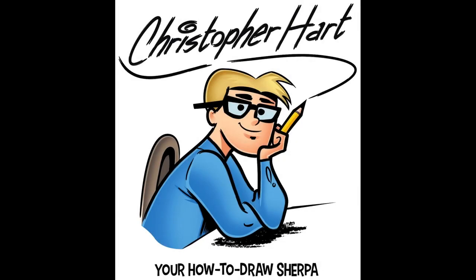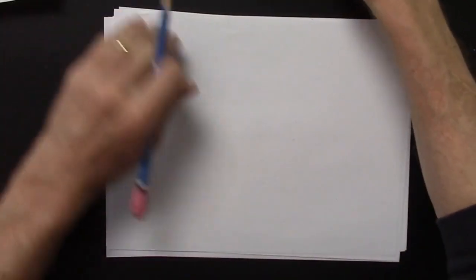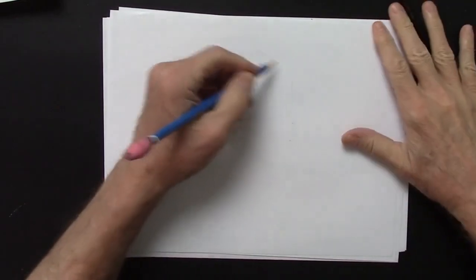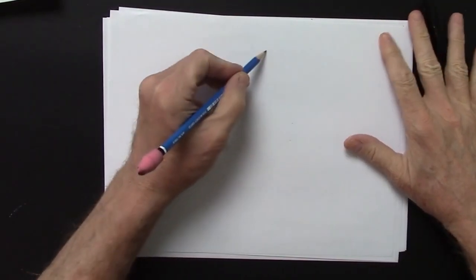Hi, my name is Christopher Hart. I'm the author of many books on how to draw cartoons, and I'm going to show you how to draw a very simple cartoon today. It's a super simple cartoon, just follow along, and I'll use my marker at the end and make it a little darker. I'm going to do a little puppy, a very simple puppy.